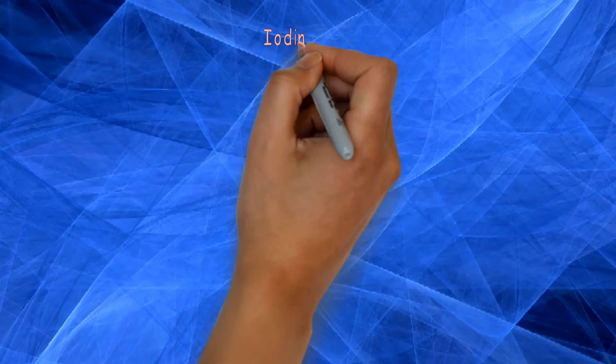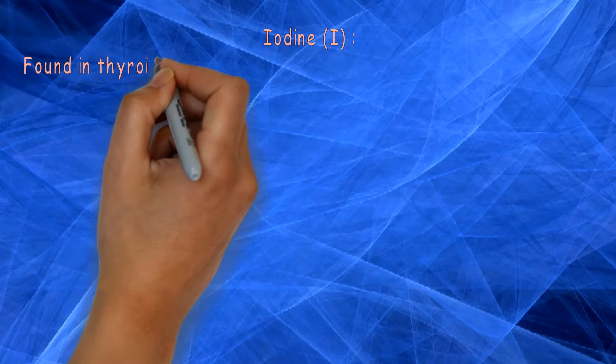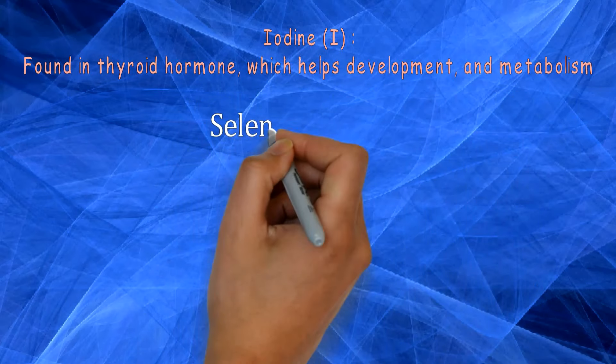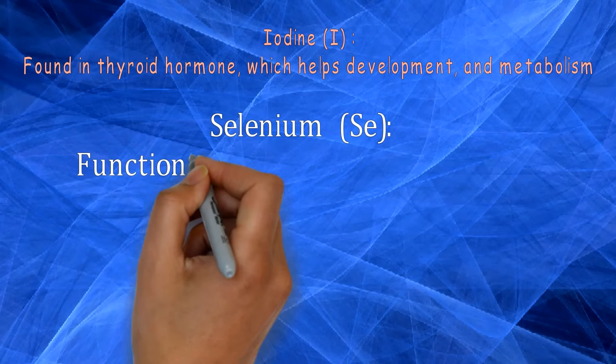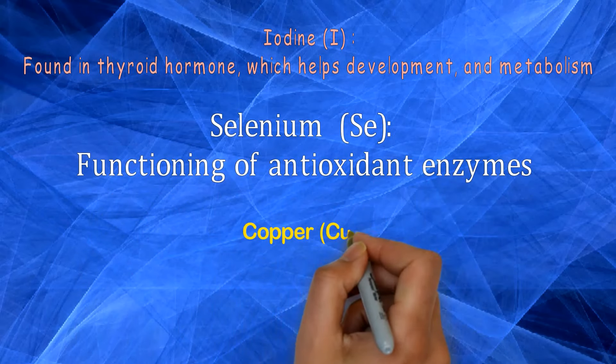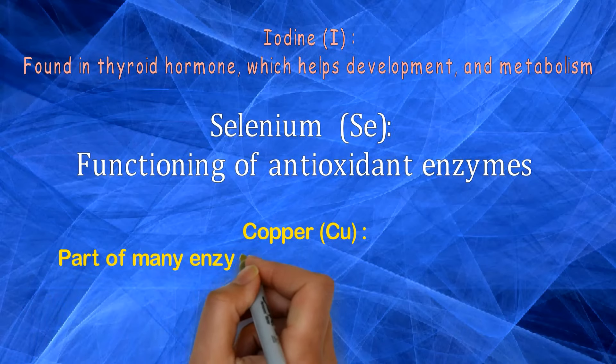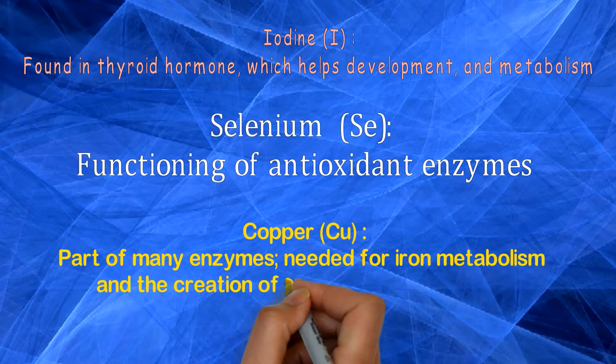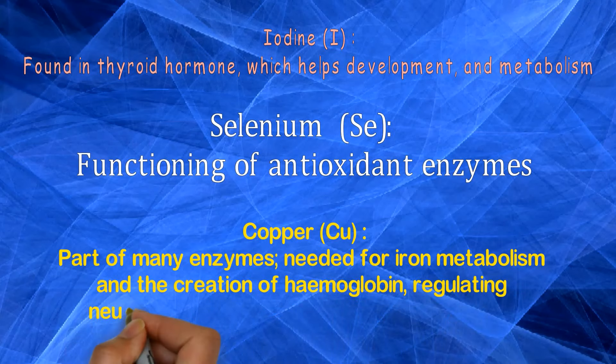Iodine is found in thyroid hormone which helps development and metabolism. Selenium: functioning of antioxidant enzymes. Copper is part of many enzymes needed for iron metabolism and the creation of hemoglobin, regulates neurotransmitters and cleans free radicals.